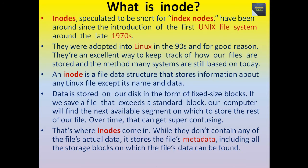An inode is a file data structure that stores information about any Linux file except its name and data. Data is stored on our disk in the form of fixed size blocks. If we save a file that exceeds a standard block, our computer will find the next available segment on which to store the rest of our file. Over time, that can get super confusing. That is where inodes come in — while they don't contain any of the file's actual data, it stores the file's metadata including all the storage blocks on which the file's data can be found.